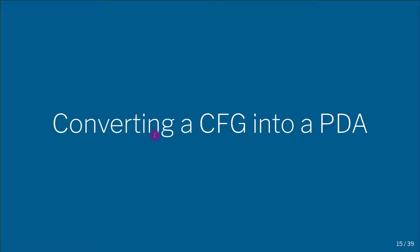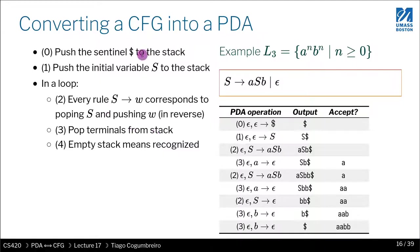Let's convert a context-free grammar into a PDA. The basic idea is to realize that the arrow in a grammar rule is a hint that you also have an arrow in your PDAs. You kind of use the PDA as an interpreter of grammar rules.